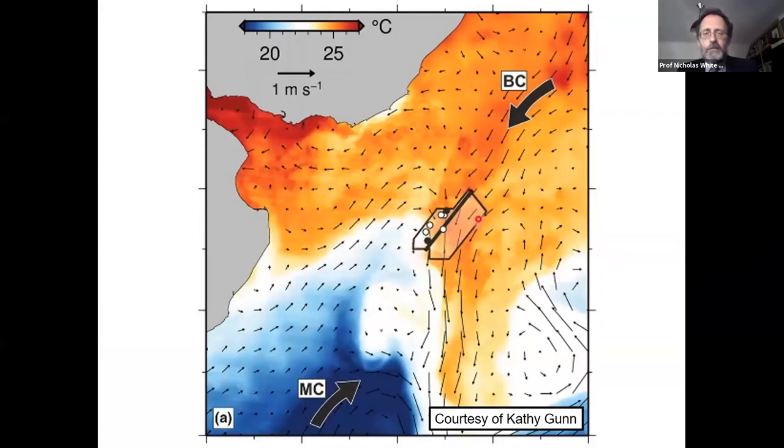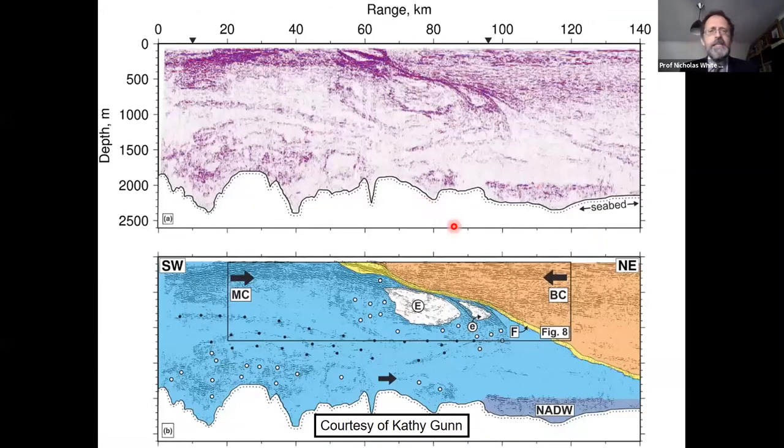We're just off the River Plate here, Uruguay to the north, Argentina to the south. The orange stuff is the Brazil Current, which is warm salty water meeting with Antarctic Circumpolar water coming from the south, which is cold and fresh. It meets at a major frontier. We are lucky enough to have access to a three-dimensional industry standard seismic reflection dataset that straddles the front.